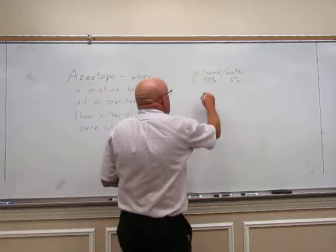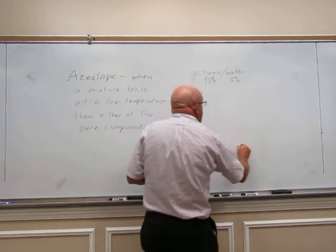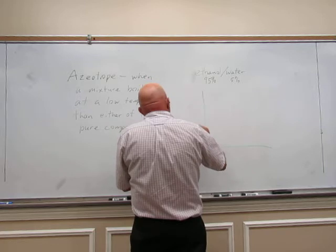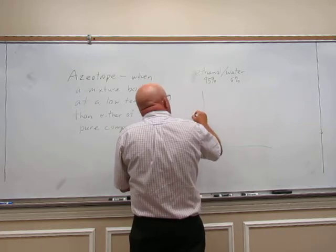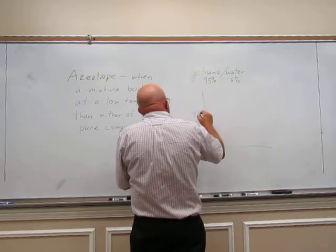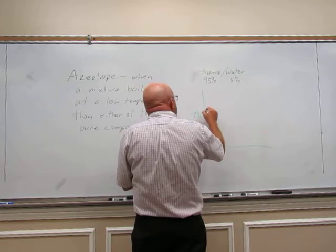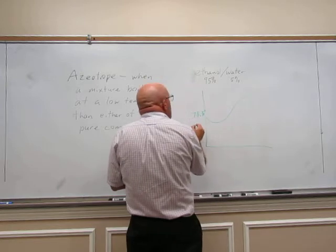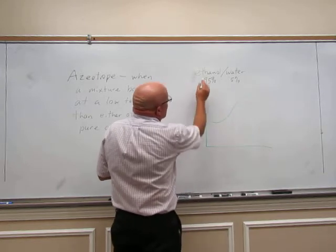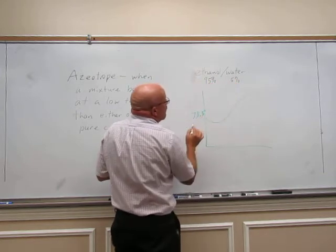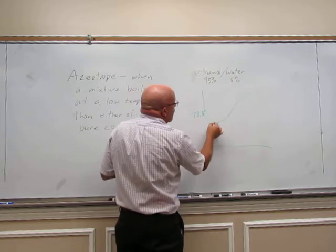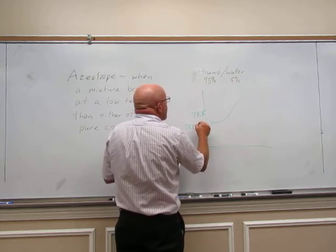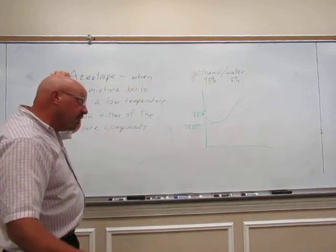Let's look at a plot here. Pure ethanol boils at 78.3 degrees. But the 95% ethanol, 5% water boils at 78.15. I know it's not much, but that is a little bit of a difference. It does boil at a lower temperature.